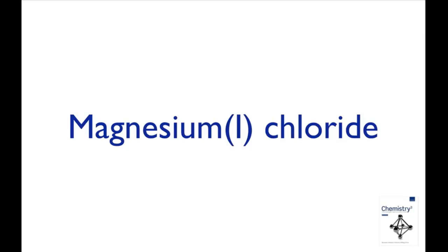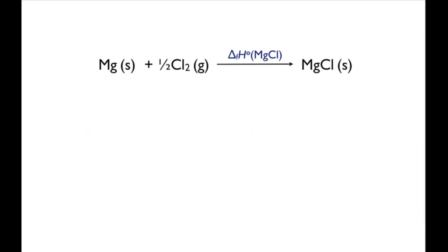In this screencast, we'll use enthalpy cycles to look at whether the unknown compound magnesium chloride is stable with respect to the elements, and if it is, explore other reasons why it doesn't exist. To see whether magnesium chloride is stable with respect to the elements, you need to construct a Born-Haber cycle, which will allow you to calculate its enthalpy of formation.